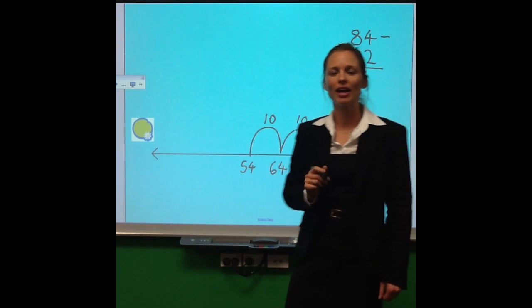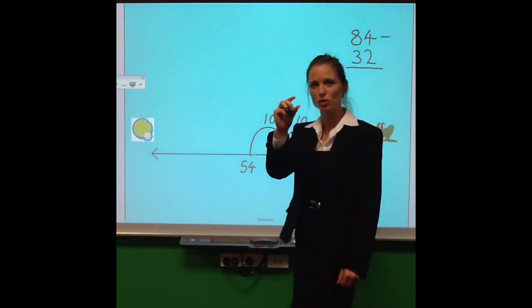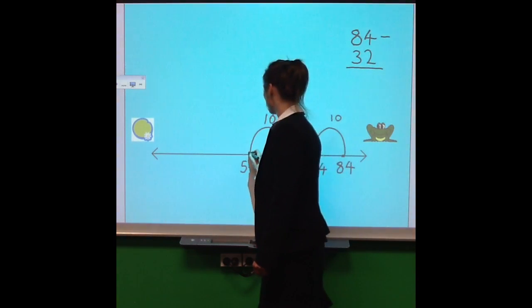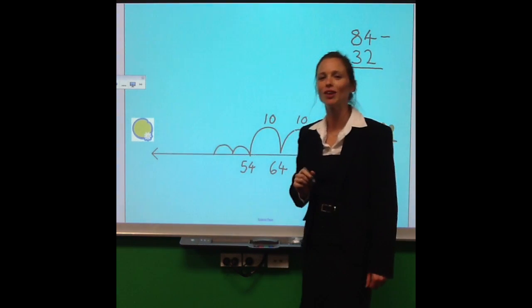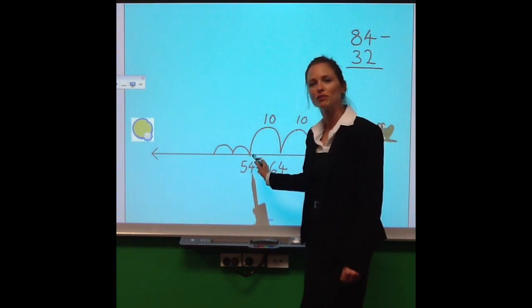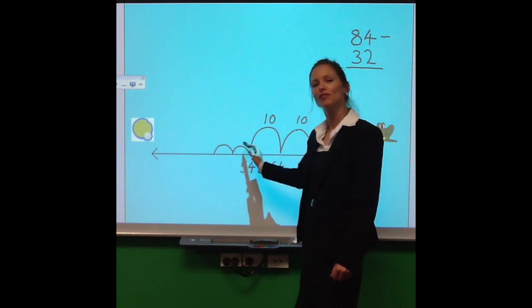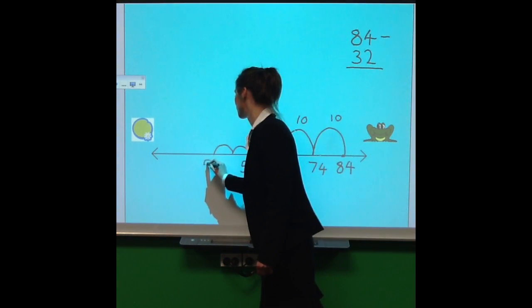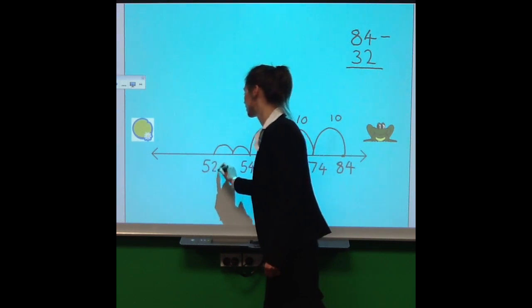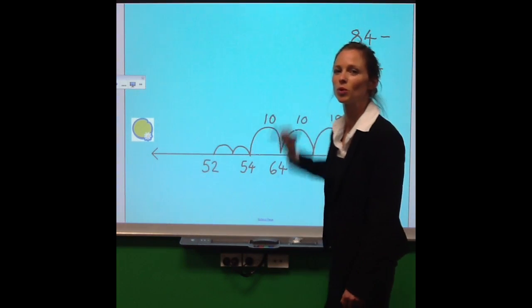Now let's have a look at our units. We've just got the two, so we just have to do two small jumps. And again, I'll get you to count along with me. 54 take away two, 53, 52. And that's what we're left with. And we'll write it up the top again.